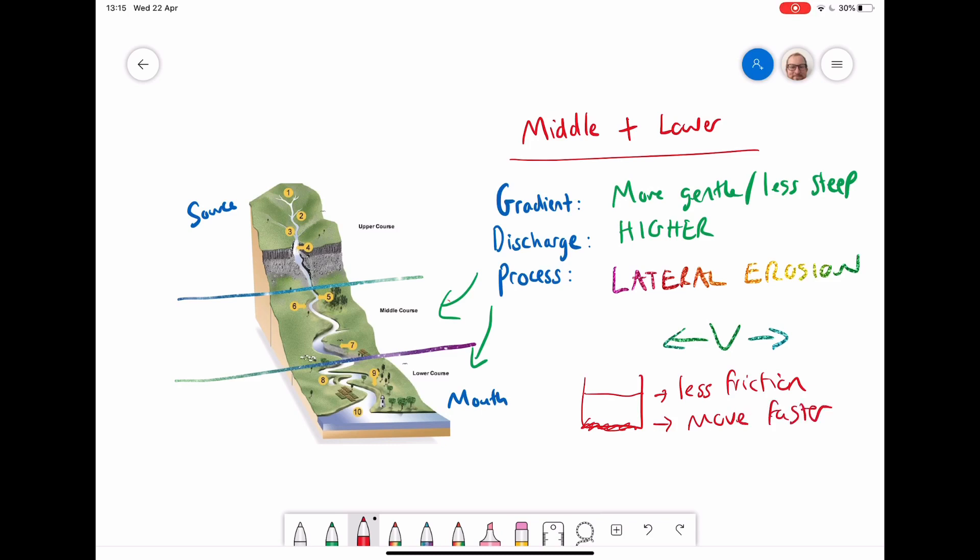And because there's less friction, this means the water can move faster. What we say in the technical term is it has a greater velocity. Because of this, this equals more energy, which means that it can erode outwards rather than just eroding downwards. Also, because this gradient has become less steep, gravity isn't having such a big effect on it. But we've got so much more energy because there's more volume of water.